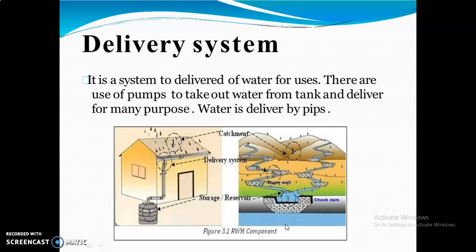The delivery system is used to deliver water for various uses. Pumps are used to take out water from a tank and deliver it for many purposes. Water is delivered by pipe. As seen in this picture, this is the storage tank — that is, a reservoir — and these are the delivery system components.